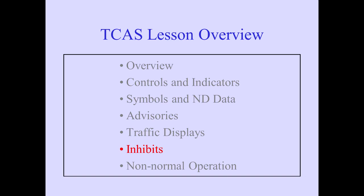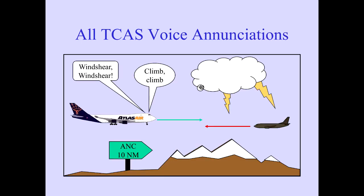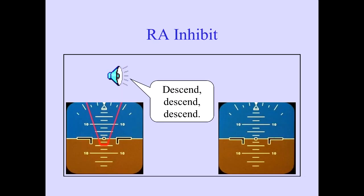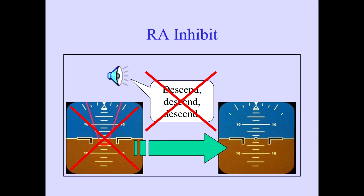Let's discuss situations where TCAS advisory information is inhibited. At low radio altitudes, or if a ground proximity warning or wind shear warning occurs, TCAS voice enunciations are inhibited and TCAS operates in the TA-only mode until the inhibit ends. If an RA is in effect when an inhibit occurs, the RA voice enunciation will cease and PFD pitch guidance will be terminated.